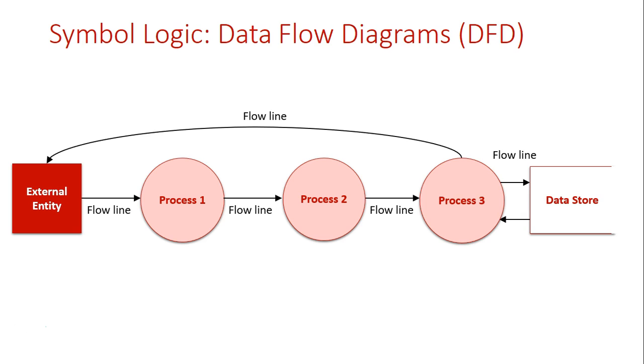Our external entities are entering data into the system or retrieving data from the information system. We have multiple processes transforming data within the system and the use of data stores for the actual storage of information. Our flow lines are illustrating all over the place the movement of data and the transformation of data within the information system.